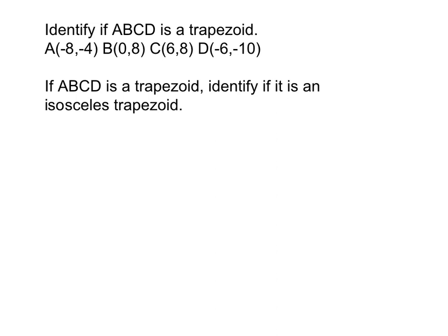So what we know about a trapezoid is that one pair of opposite sides has to be parallel. Well, in order to prove segments are parallel, we need to show that they have the same slope. So the way that you're going to do this problem is you're going to find the slope for every single combination: AB, BC, CD, and AD.